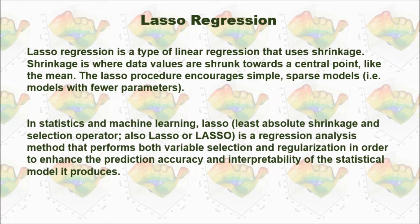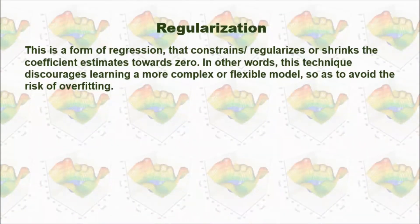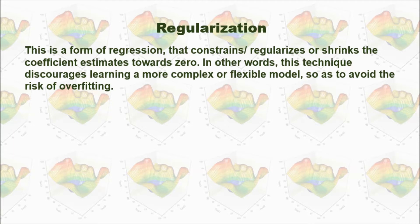Lasso Regression is also a type of linear regression that uses shrinkage. Shrinkage is where data values are shrunk towards a center point. So we can use Lasso Regression to simplify the model and build a model with fewer parameters. Lasso Regression constrains, regularizes, or shrinks the coefficient estimates towards zero, which helps avoid the risk of overfitting. This technique is called regularization.